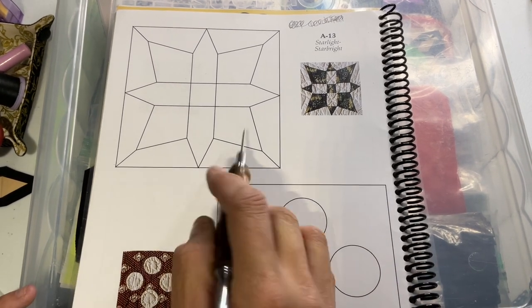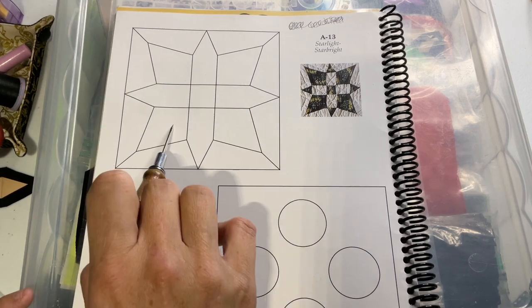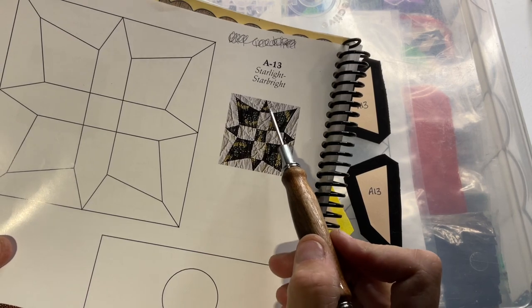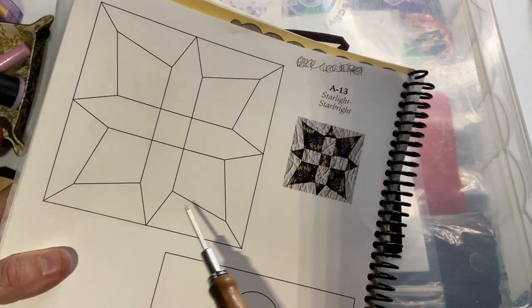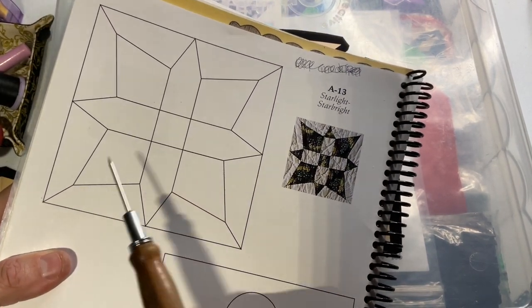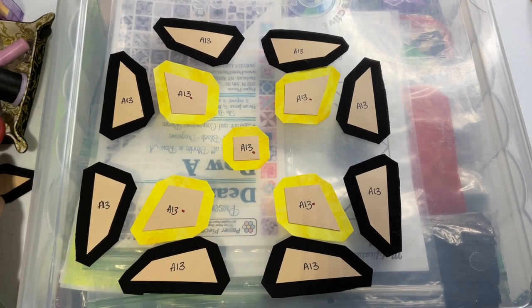So, when Paper Pieces made the kit, they made this as a block, but personally, I like this kind of a thing. The first time I made this quilt, I did make this block, but what I want to do this time is I've got my pieces, but these pieces here...